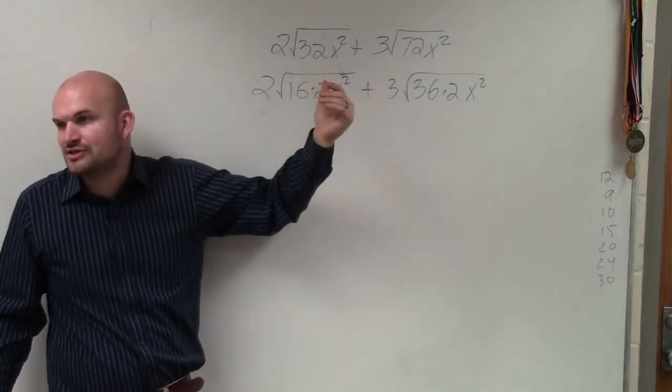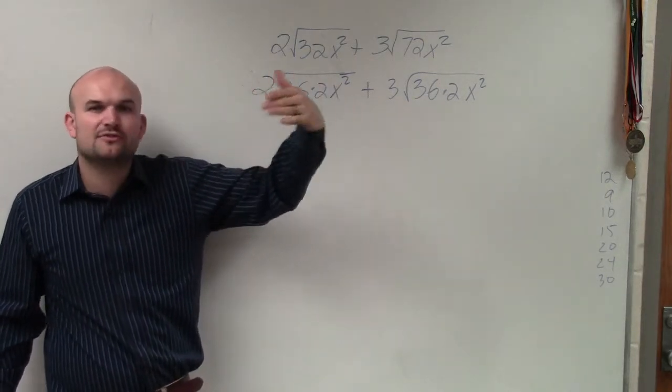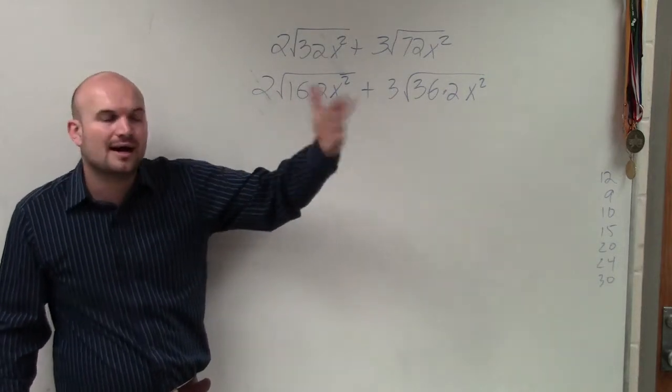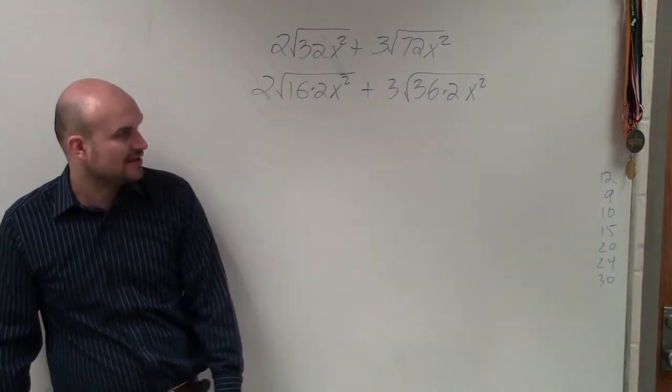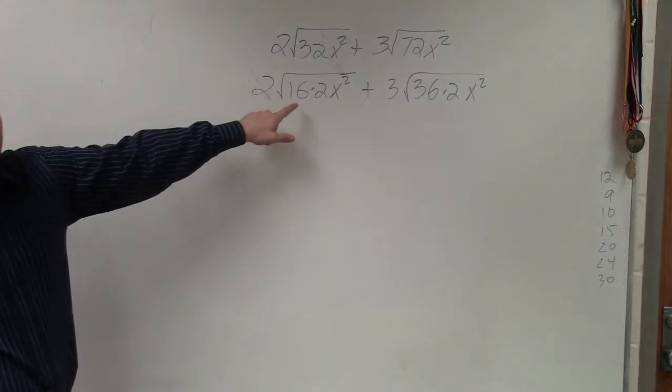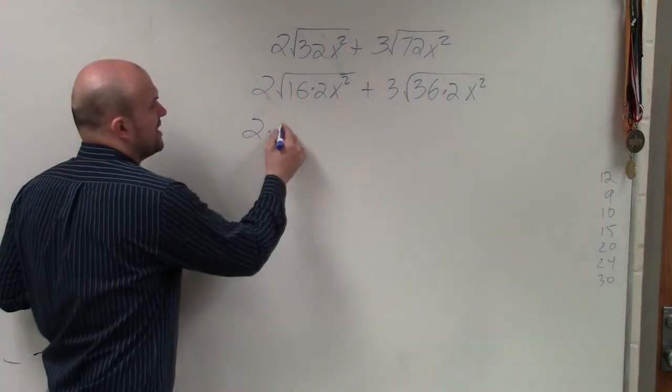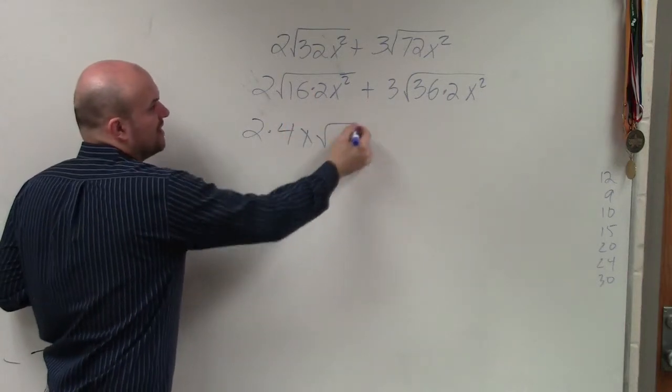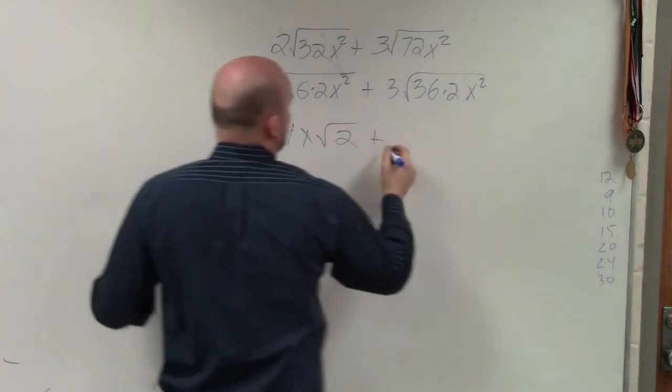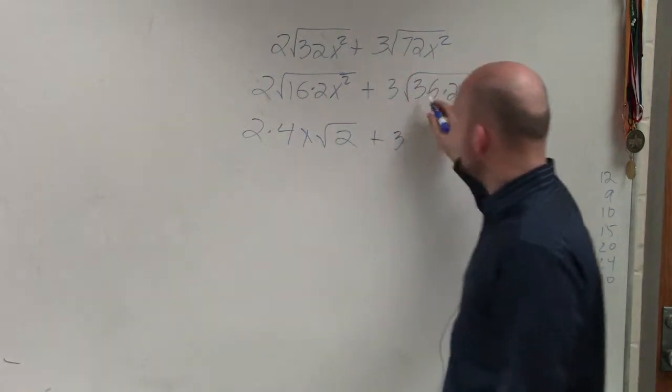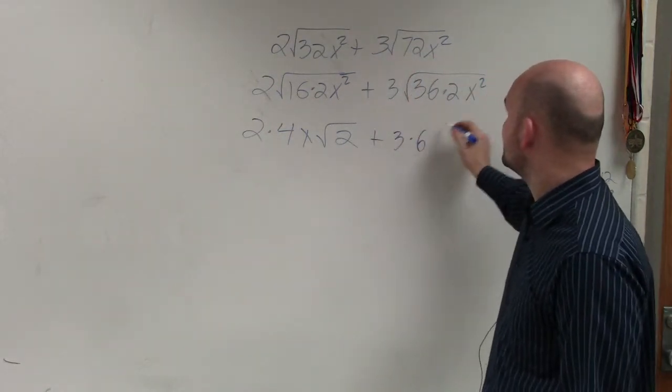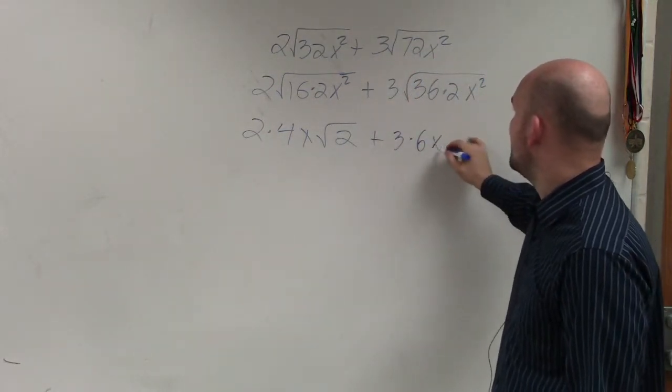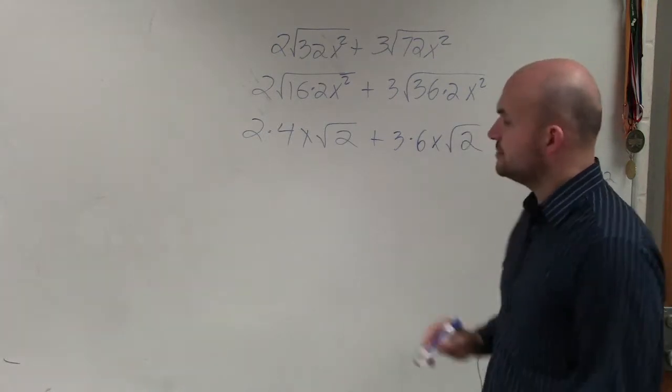It's much easier to do this with square roots, but when you have like the third, the fourth, fifth root, it gets a little more difficult. So using a factor tree is important. However, now we know what the square root of 16 is, that's 4. So 2 times 4. I know what the square root of x squared is, that's just x. So I'm only left with the square root of 2 plus 3. Square root of 36 is 6. Square root of x squared is x. So I'm left with the square root of 2.